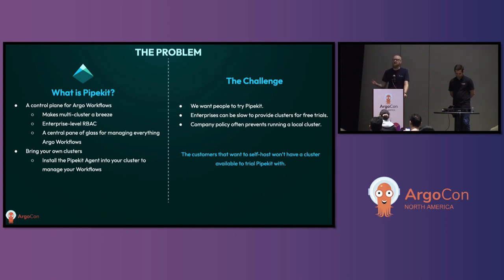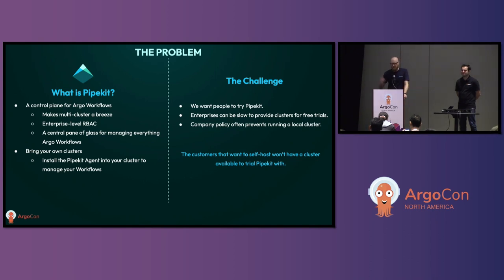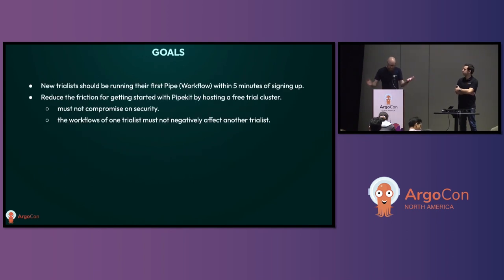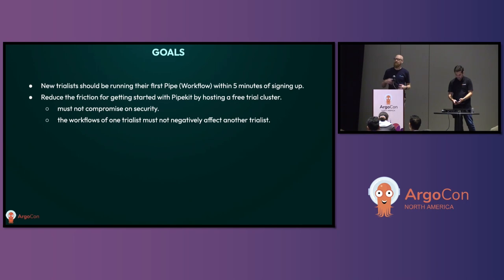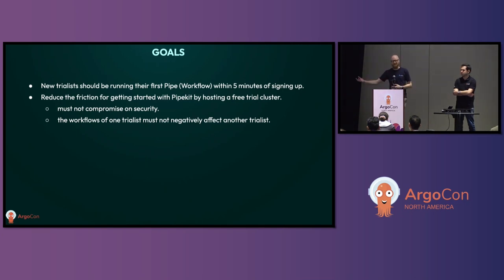The challenge we find is that those same customers who want that security also don't happen to have Kubernetes clusters just lying around to try new software. They also usually have some form of red tape that prevents people from running up Minikube or something like that. So we struggle to get people to try our software to see if it's suitable for them and then hopefully go on to buy it. Our goal is to try and get people using PipeKit, so we came up with some high-level goals: new trialists should be up and running with their first workflow within five minutes of signing up. We want to reduce the friction of getting started by offering them a hosted cluster so they can just play around, and then if they're happy with PipeKit, they can take it away and set up their own infrastructure with their actual real workloads.